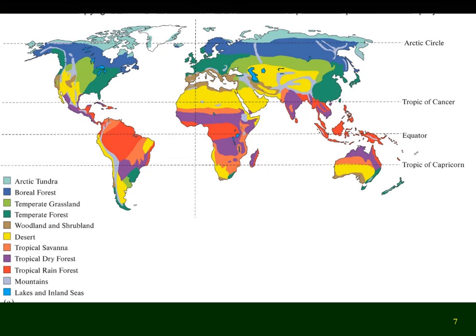Reviewing where these biomes are: we've covered the tropical rainforest, shown in red along the equator, the tropical dry forests in purple next to those — with lots of tropical dry forests in India. And then the tropical savannah, which sits next to the rainforest or the tropical dry forest depending on the soil. We have these huge savannahs across Africa.